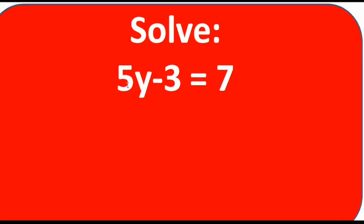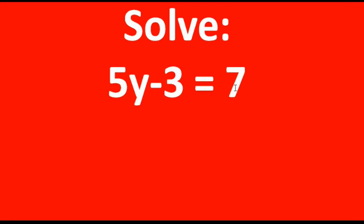Here we have a linear equation: 5y minus 3 equals 7. We call it an equation because there is an equal sign. The left part we call LHS or left-hand side, and the right part we call RHS or right-hand side.